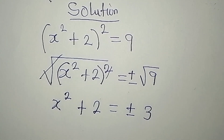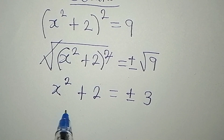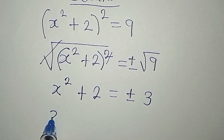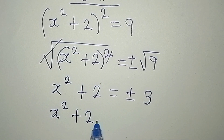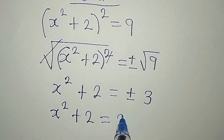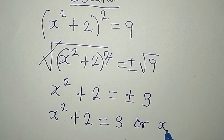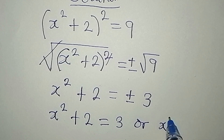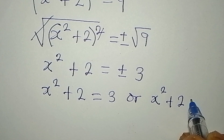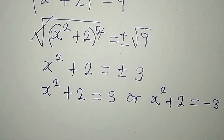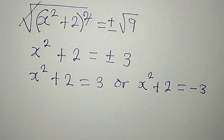The square root of 9 is 3, so from here we get two equations: x squared plus 2 equals 3, or x squared plus 2 equals negative 3. These are the two equations we are going to deal with.